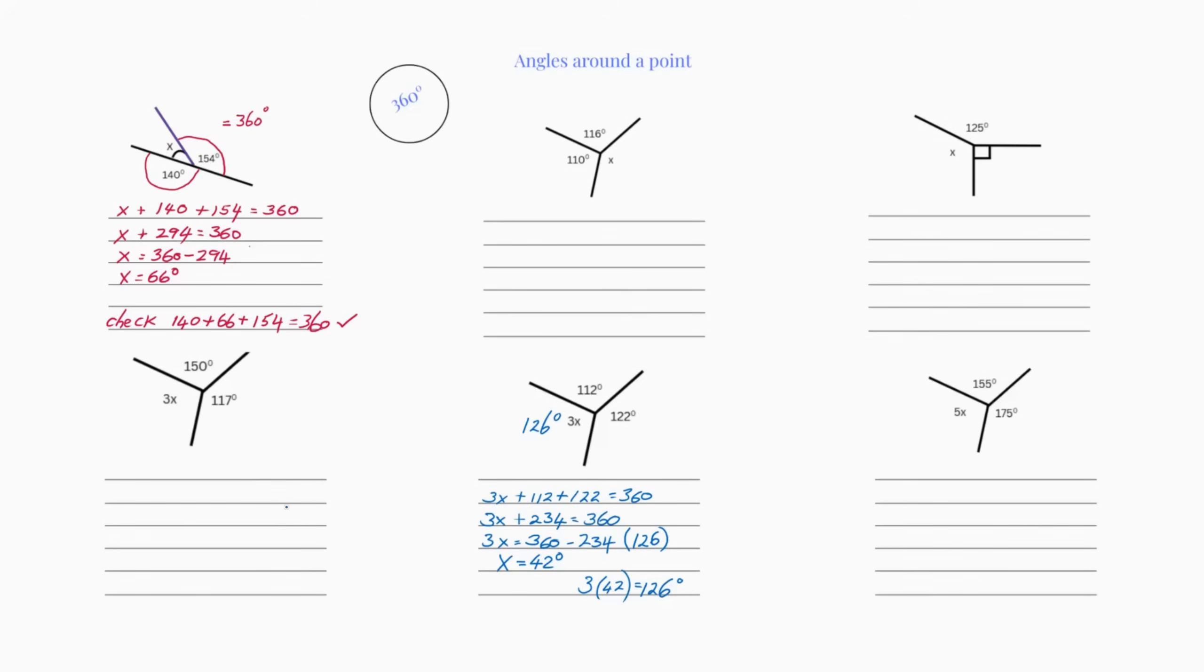Hi guys, so this is explaining angles around a point. It's very common, you need to know it in primary, high school, all levels. Angles around a point will always equal 360 degrees, purely because it's a circle.